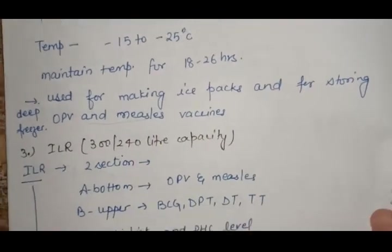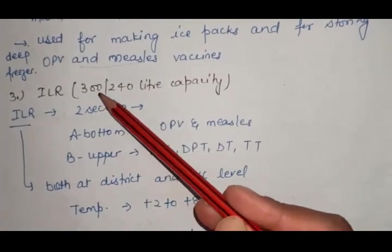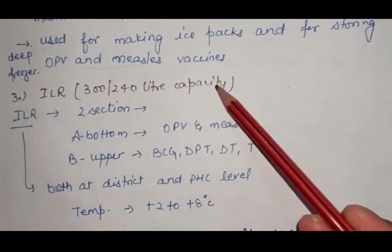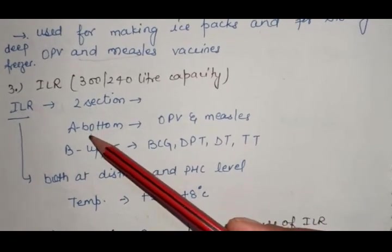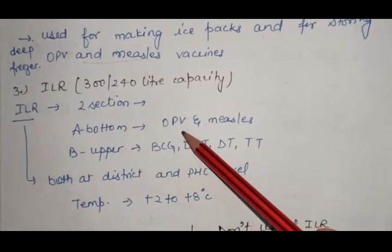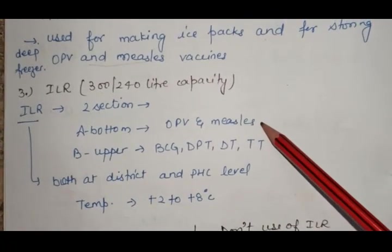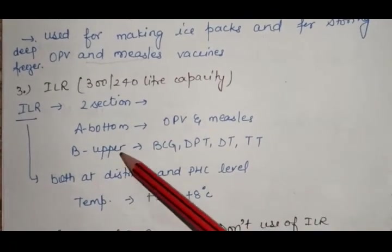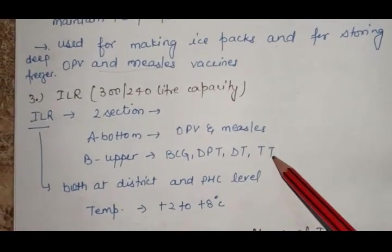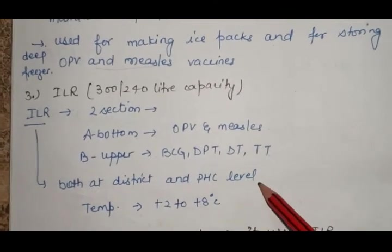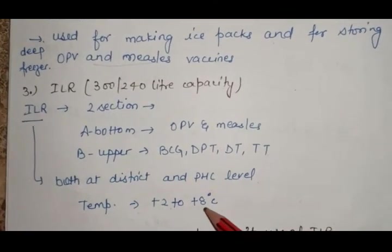Third is ILR, ice line refrigerator, capacity 300 to 240 liters. ILR has two sections A and B. A is the bottom section where OPV and measles are kept at lower temperature. B is the upper section where BCG, DPT, DT and TT are kept. Temperature maintained is 2 to 8 degrees Celsius.